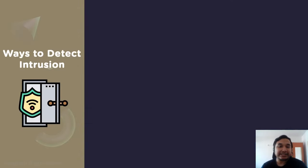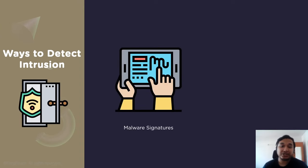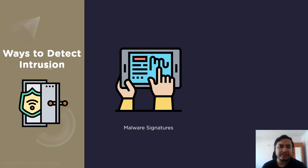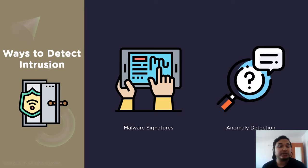Intrusion detection systems primarily use two key methods: signature-based intrusion detection and anomaly-based intrusion detection. Signature-based intrusion detection is designed to detect possible threats by comparing network traffic and log data to existing attack patterns, called signatures, which could include byte sequences also known as malicious instruction sequences. Signature-based detection enables you to accurately detect and identify known attacks.